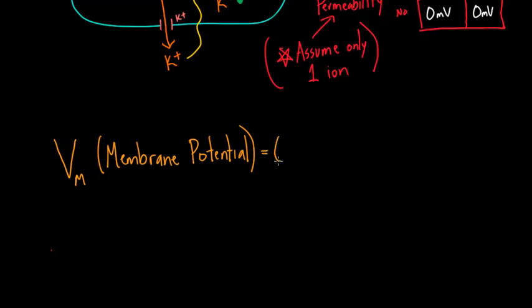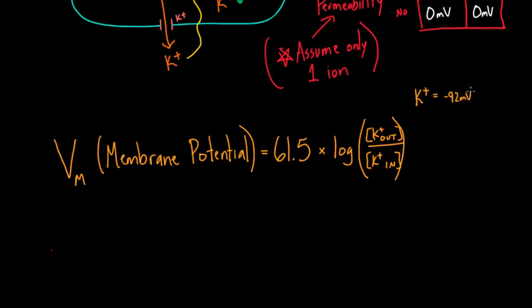And the formula is actually surprisingly simple. It's 61.5, and this is a simplified version because there are a lot of constants in here that get thrown together in that 61.5. And you just take the log of the concentration of potassium on the outside, I'll say K out, potassium on the outside, over the concentration of potassium on the inside of the cell. So you take these two concentrations and you get this fantastic little formula. And now I can write for you, potassium over here we said was equal to negative 92 millivolts. So that would be the membrane potential.